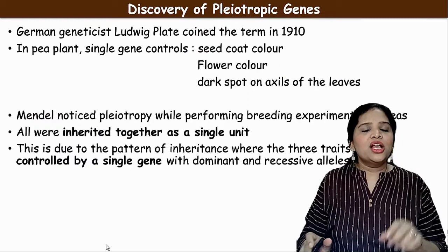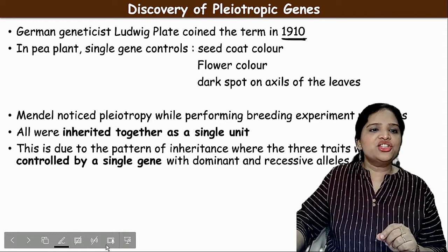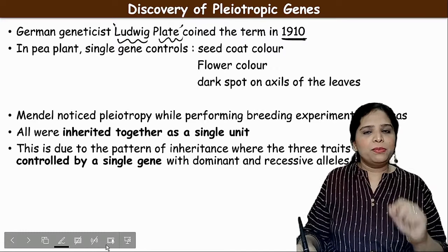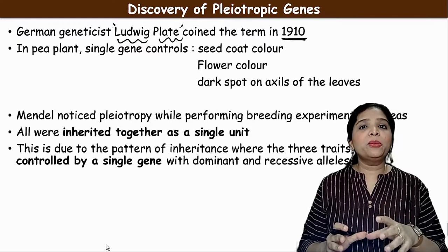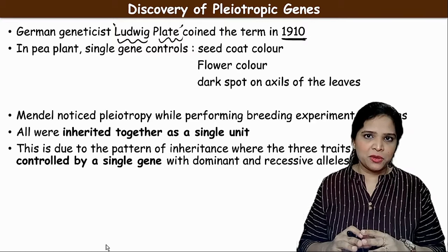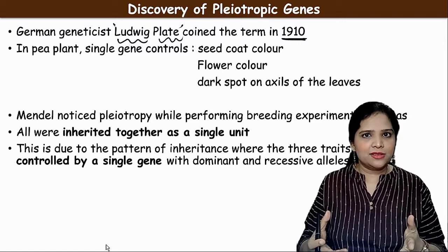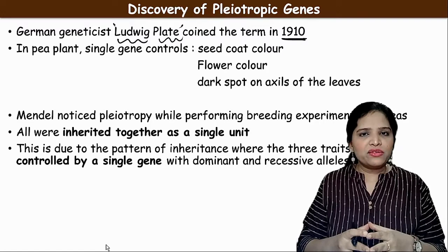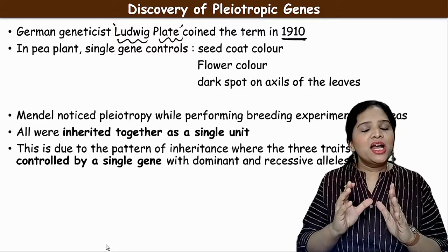The word pleiotropic gene was originally coined in 1910 by a German geneticist Ludwig Bled. This phenomenon was originally observed by Gregor Johann Mendel when he was doing his pea plant experiments, but at that time he could not recognize or explain it. Later, when scientists discovered pleiotrophy as a mechanism, they found that the same thing had been noted and recorded by Mendel.